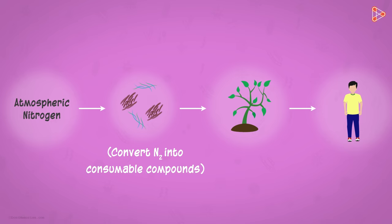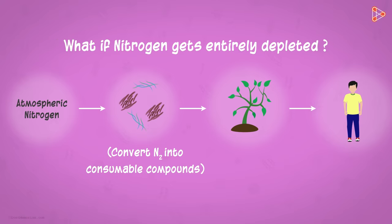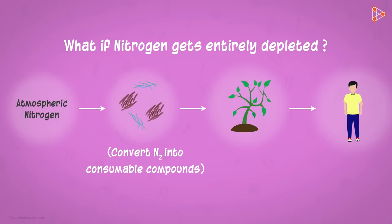But wait! If all the nitrogen in the atmosphere is gradually fixed by these microbes and used by plants and us, then it would deplete, right? What if it gets entirely depleted? What will happen then? How will organisms survive?